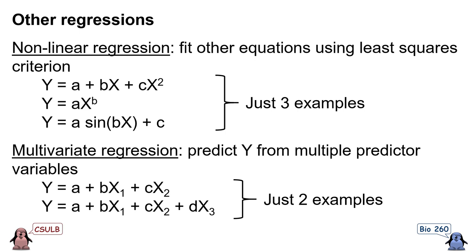There is also multivariate regression, where we have more than one independent variable contributing to the dependent variable — we predict y from multiple predictor variables. Instead of just having one y-intercept and slope to estimate, we would have a y-intercept and multiple slopes. For example, if we are trying to predict a student's college GPA, we might wish to consider both their high school GPA and their SAT scores, not just one of those.